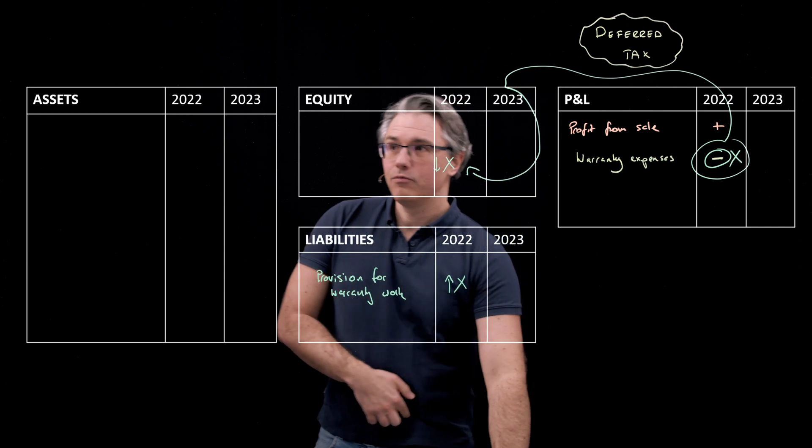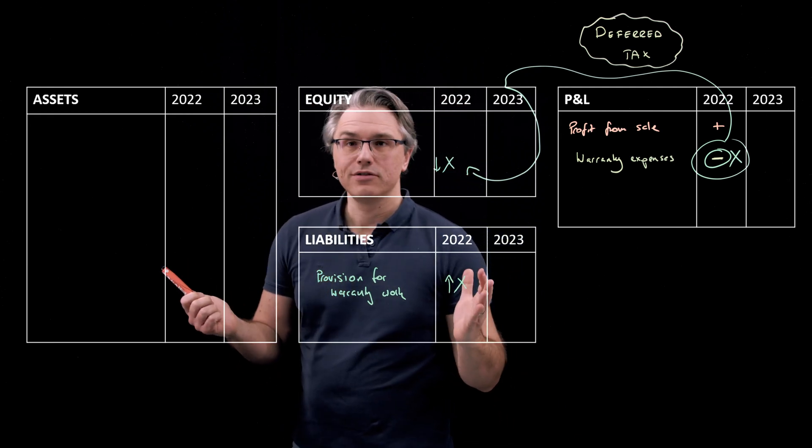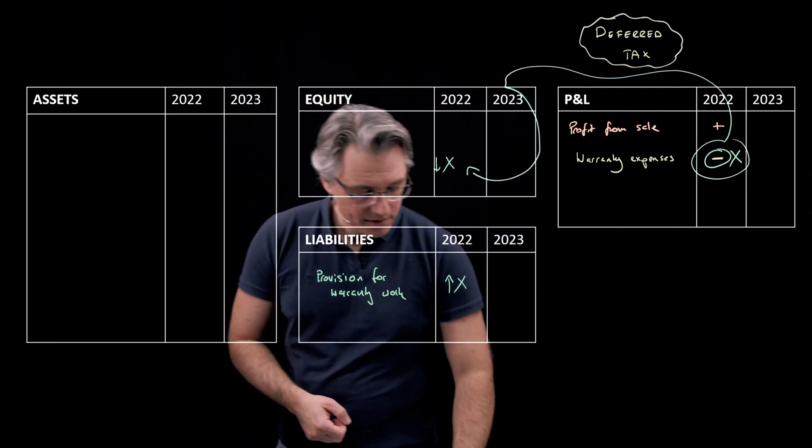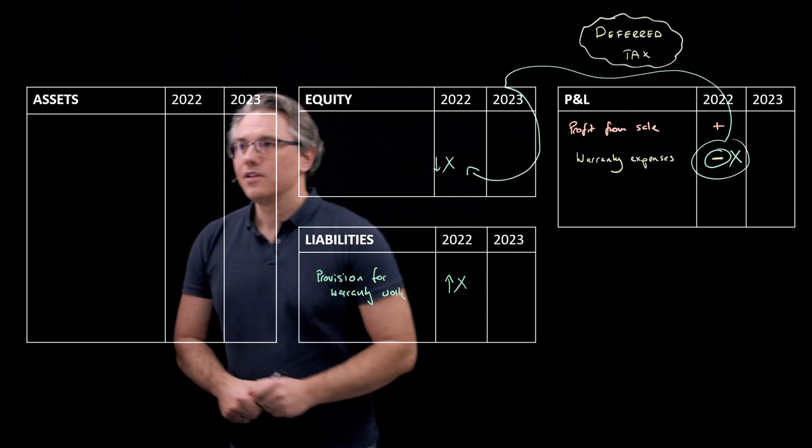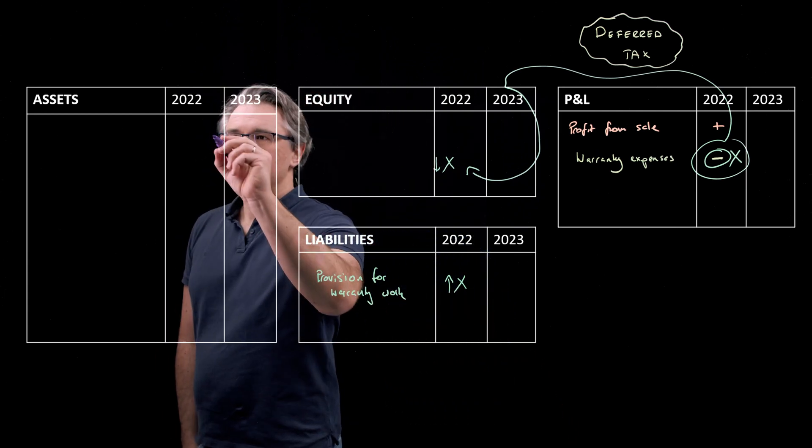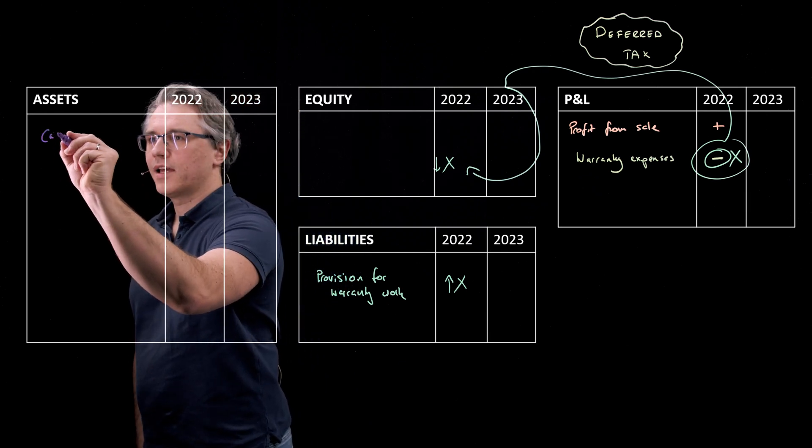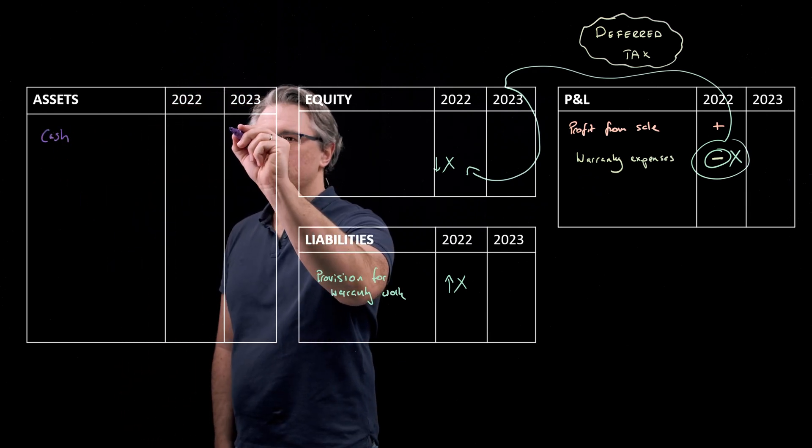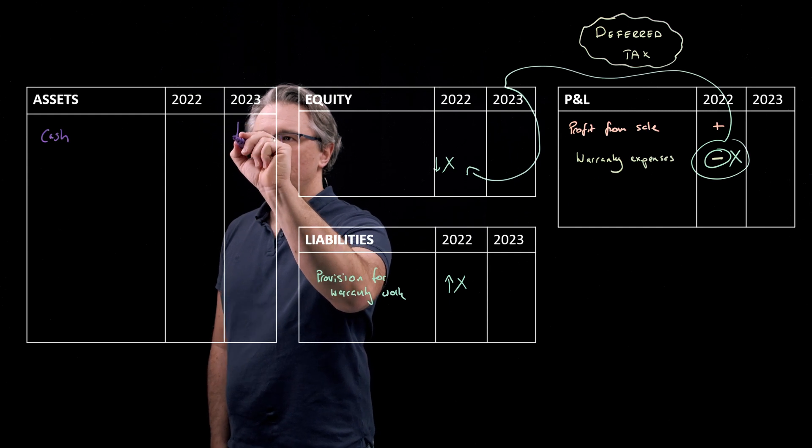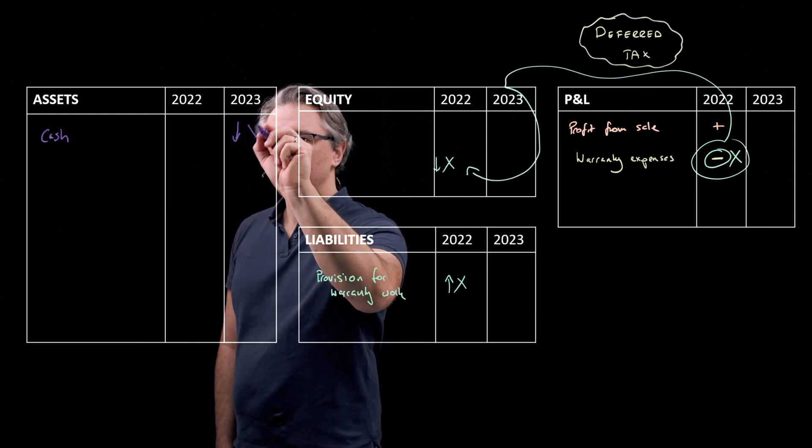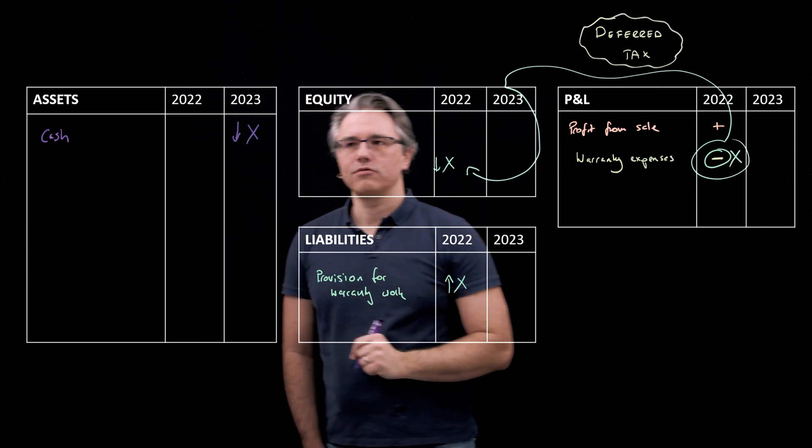So something that will actually create a tax saving realistically on a cash basis when you do the warranty work, which is at some future point in time. Maybe the warranty work will be performed in 2023. Let's make a quick assumption that this is the case. So in 2023, you actually perform the work. So cash comes out because you have to pay for it or in some way suffer an expenditure. And let's say you do the work over here, cash comes out.